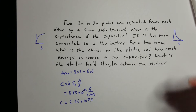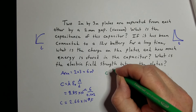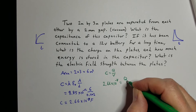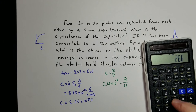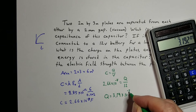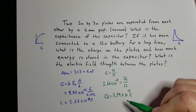Now that we know the capacitance, let's find the charge. C = Q/V. We know C is 2.66 × 10⁻⁸ farads and we plugged it into a 12-volt battery. Solving for Q: Q = C × V = 2.66 × 10⁻⁸ × 12 gives us a charge of 3.19 × 10⁻⁷ coulombs. That's the charge on each plate — positive on one plate and negative on the other. We often refer to it as the absolute value of the charge.